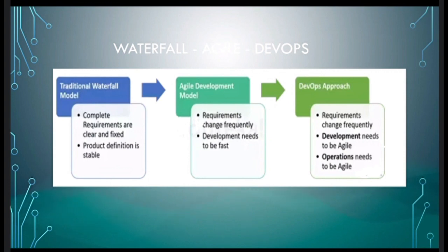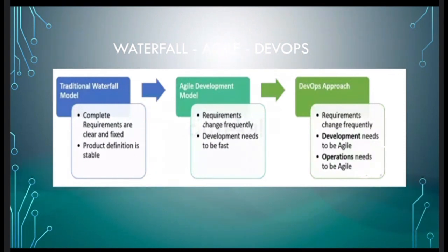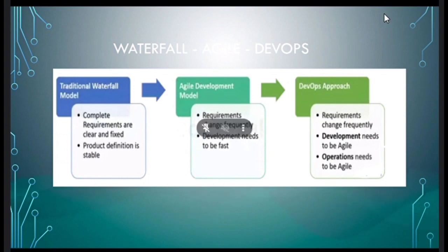Previously, around 30 persons were working on a particular project. Once automation is done, only three persons are needed to manage the whole deployment and testing process, because it's automated. Those three persons handle maintenance or any updates that are required.